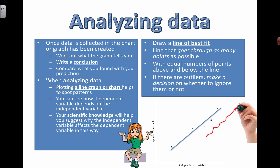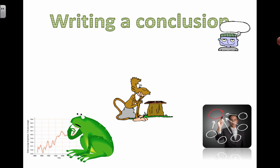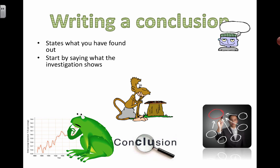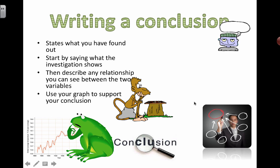If that is just maybe an error that popped up because you didn't have time to repeat your result, that's something you need to think about as well. When writing a conclusion, a conclusion states basically what you found out as a result of doing your experiment and collecting your data. Start by saying what the investigation shows, then describe any relationship you can see between the two variables. If the data overall is increasing, then you can describe that relationship as: as the independent variable increases, the dependent variable is also increasing. Use your graph to help support your conclusion.